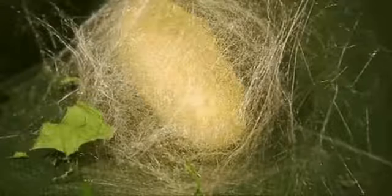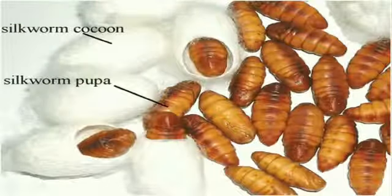The fourth stage is when the caterpillar inside the cocoon turns into a pupa. It rests inside the cocoon for many days. The fifth stage is when finally the cocoon is broken open and the silk moth flies out of it. The pupa has turned into the silk moth, and the adult moth now lays eggs again — this is how the life cycle continues.